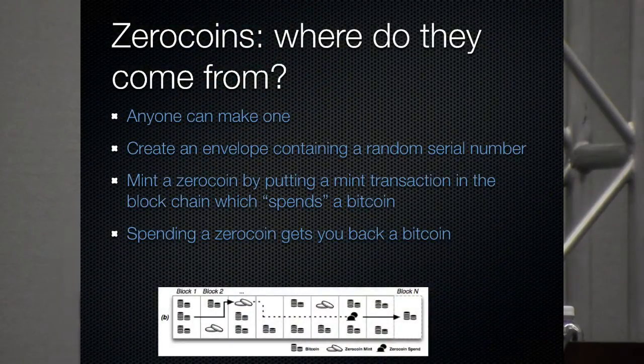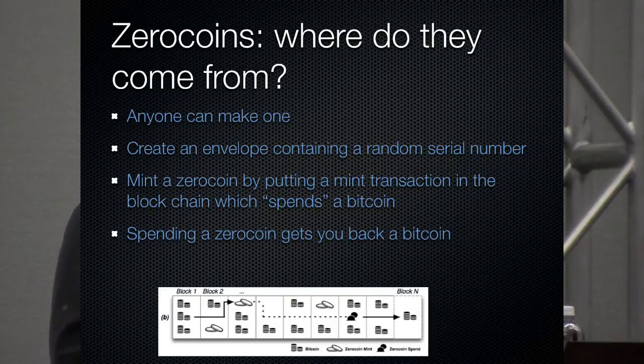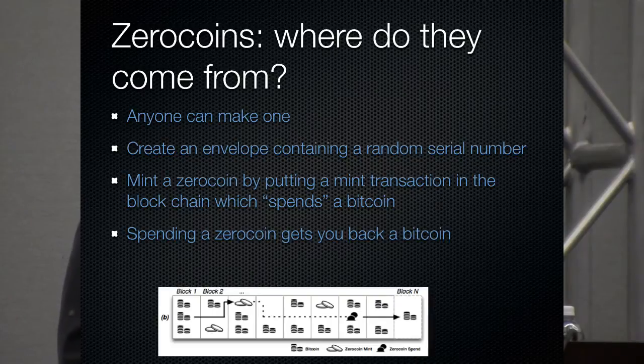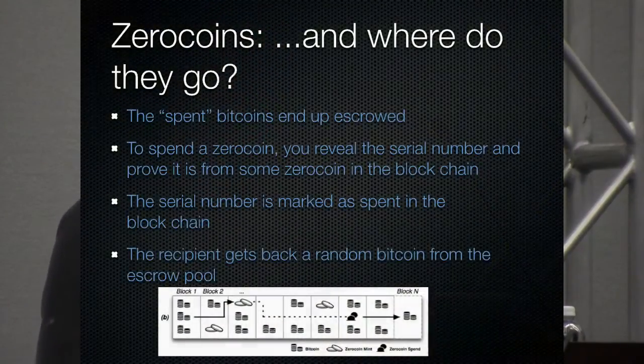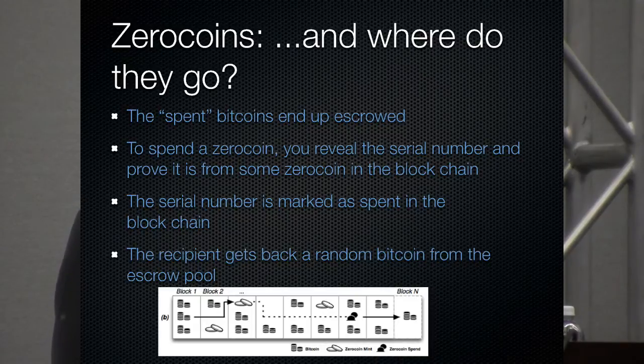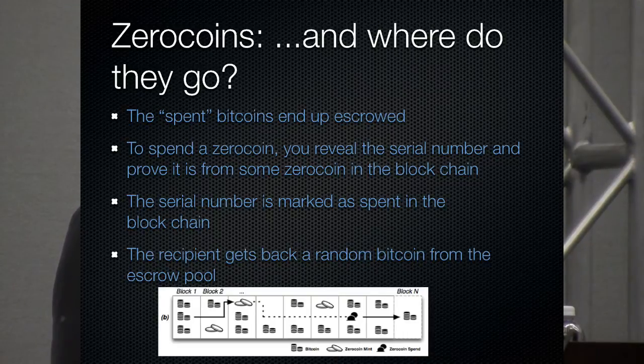So instead, we make another, our contribution was basically figuring out another way to make an opaque envelope and make it actually work. And so we use what are known as cryptographic commitments, the details of which are not relevant here. Anyone can make one of these commitments with the public parameters and so you might think that there's no value in the system. But in fact, what you do is you create this envelope and then to give it value, you have to insert a ZeroCoin mint transaction onto the blockchain which takes as an input one or two or 20, whatever the denomination is, bitcoins and contains in that transaction your opaque envelope with a serial number in it. And so when you spend this, the person you spend it with or if you spend it with yourself to use it as a mix, you get back a bitcoin. So what happens to these bitcoins? Where do they come from? Where do they go? These spent bitcoins that you put in the ZeroCoin mint transaction don't go anywhere. They get escrowed on the blockchain, so to speak. And so to spend the ZeroCoin, you reveal the serial number in that envelope and you prove in zero knowledge that it is from some ZeroCoin in the blockchain without revealing what ZeroCoin that is.